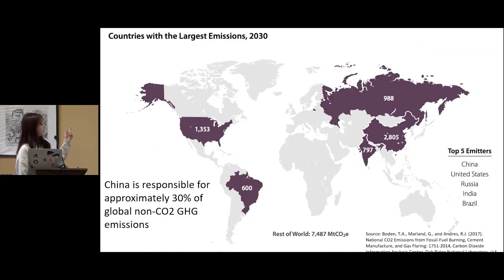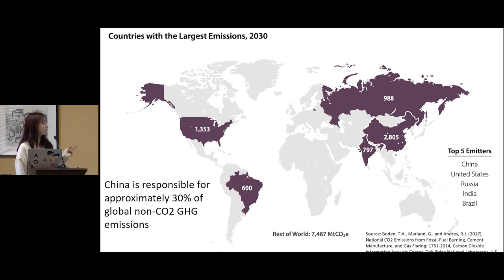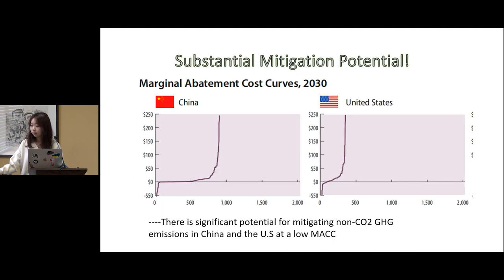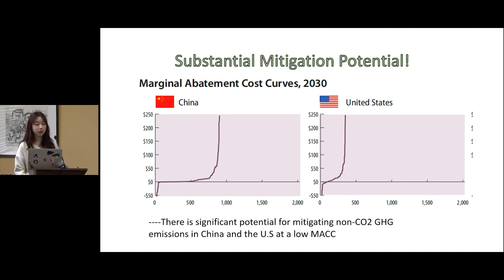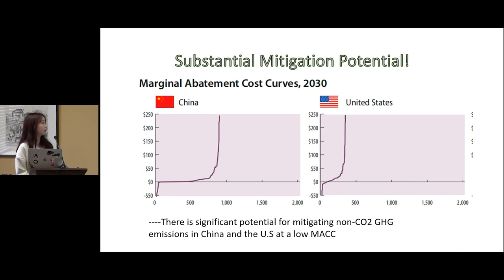This map shows the countries with the largest emissions up to 2013. As we can see, the first and second are China and the United States. According to some studies, China is responsible for approximately 30 percent of global non-CO2 greenhouse gas emissions. Studies have also shown substantial mitigation potential for non-CO2 greenhouse gases in China and the United States, and countries with the largest baseline emissions would have the largest mitigation potential. This graph shows the marginal abatement cost curves to 2030 for China and the United States, and we can see that both countries can mitigate non-CO2 greenhouse gases at very low cost.